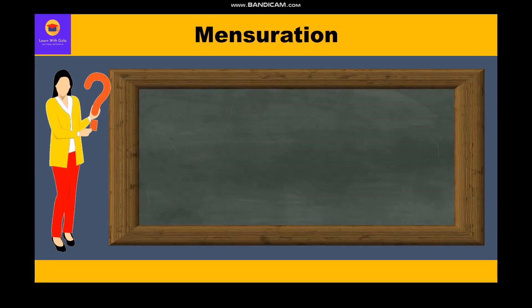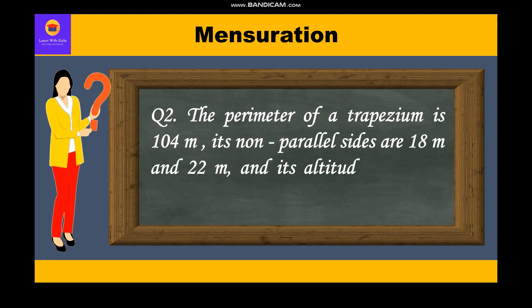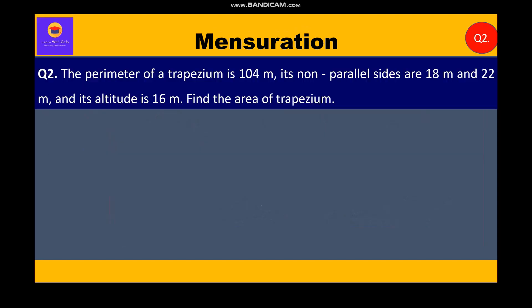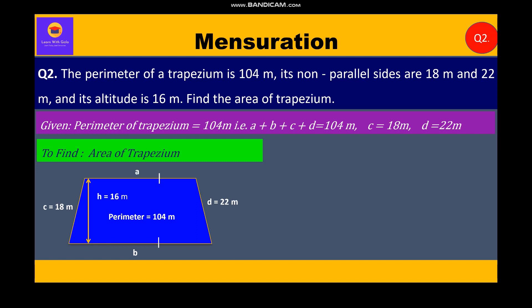Now let's take up the second question. The perimeter of a trapezium is 104 meters. Its non-parallel sides are 18 meters and 22 meters, and its altitude is 16 meters. Find the area of trapezium. In this question, we are given the perimeter of a trapezium is 104 meters, that is a plus b plus c plus d is equal to 104 meters, c is equal to 18 meters and d is equal to 22 meters. We have to find the area of trapezium. So let's start with the solution.